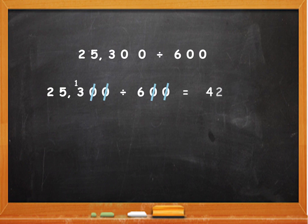6 2s are 12 and 13 minus 12 is 1. That's the final remainder in the answer. Q is equal to 42 and R is equal to 1.